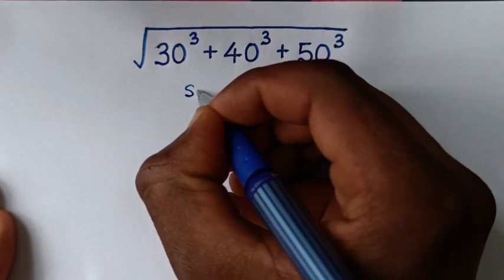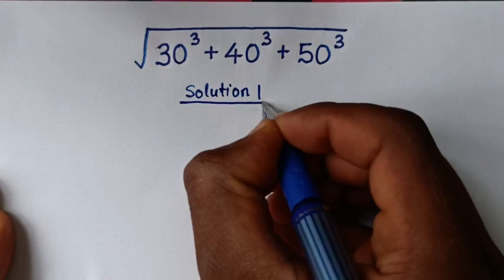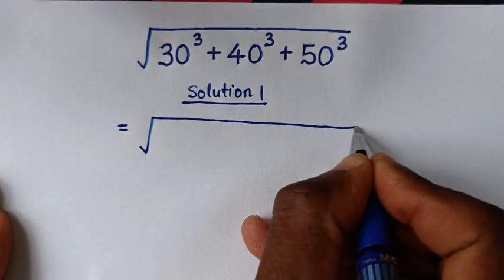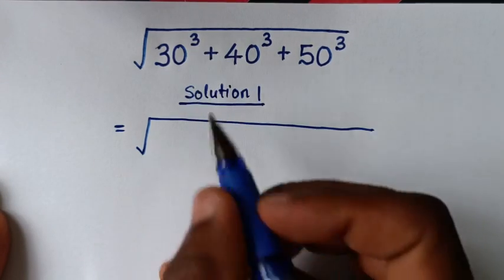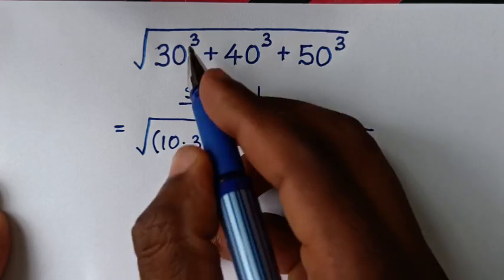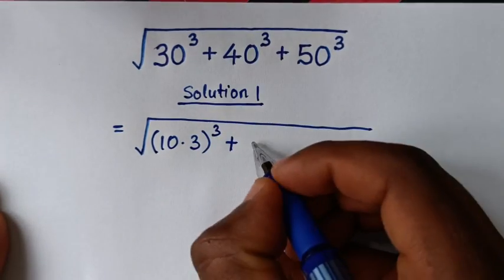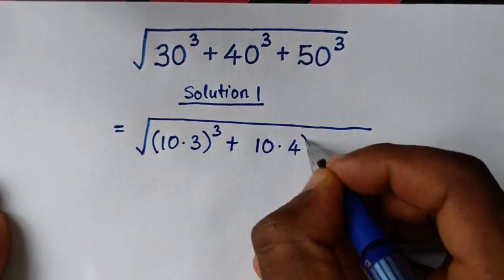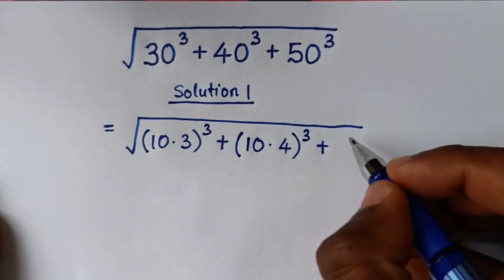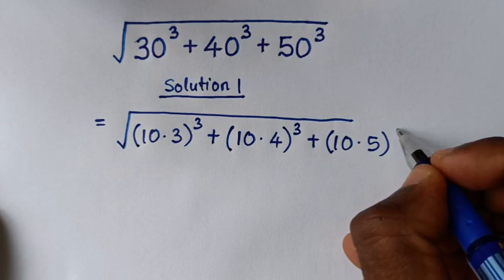Let's call this Solution 1. It will be equal to the square root of: 30 to the power 3 — where 30 is the same as 10 times 3, that bracket to the power 3 — plus 40 to the power 3 — where 40 is the same as 10 times 4, that bracket to the power 3 — plus 50 to the power 3 — where 50 is the same as 10 times 5, that bracket to the power 3.